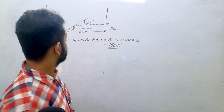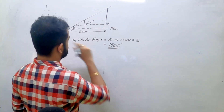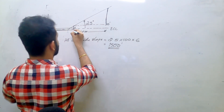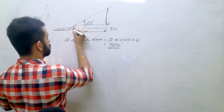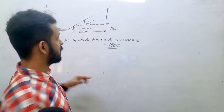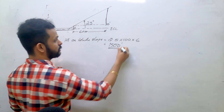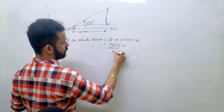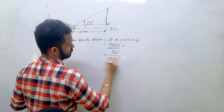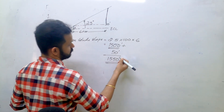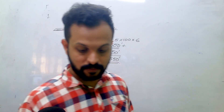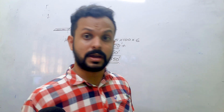Now remember, the six nautical miles we considered is from the threshold. You have to further add the ILS reference height of 50 feet. So the answer is 1550 feet.